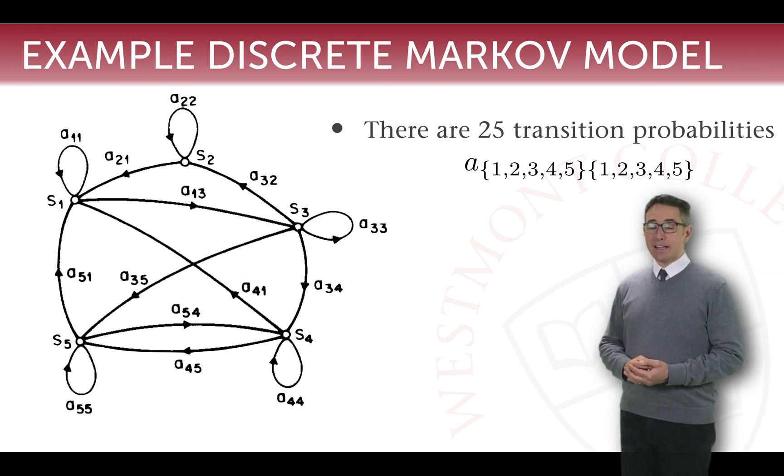Because for every state that we can be in, one through five, we have a chance of transitioning to any of the five states, one through five, including the possibility of staying in a particular state as well. So when we look at a diagram like this, this diagram is a visual representation of a five by five matrix of probabilities.